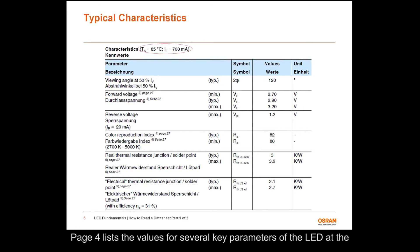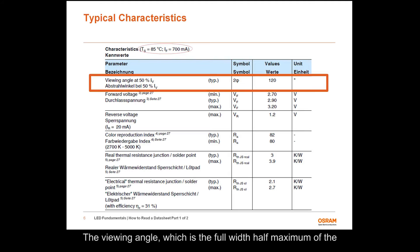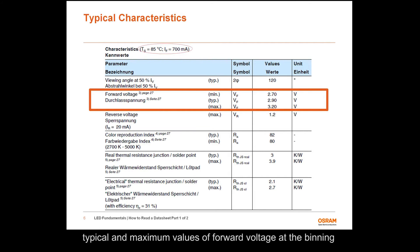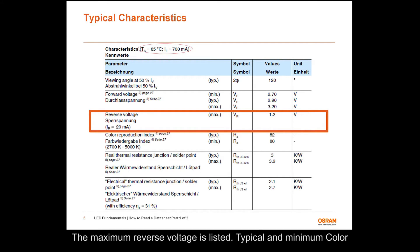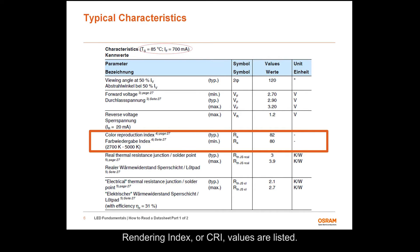Page 4 lists the values for several key parameters of the LED at the binning current and solder point temperature of 85 degrees C. The viewing angle, which is the full width half maximum of the luminous intensity of the LED, is listed in degrees. The minimum, typical, and maximum values of forward voltage at the binning current are listed. Forward voltage is measured during a current pulse of 8 milliseconds, with an internal reproducibility of plus or minus 0.05 volts. The maximum reverse voltage is listed. Typical and minimum color rendering index, or CRI values, are listed.